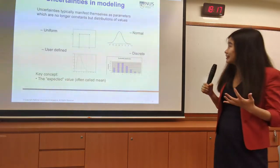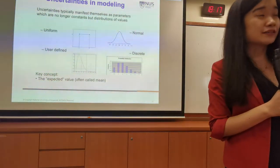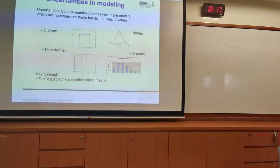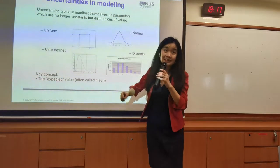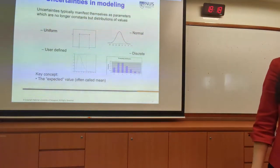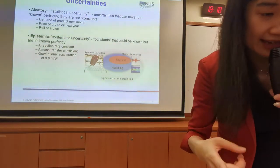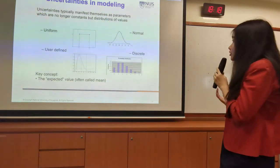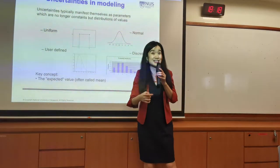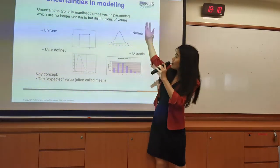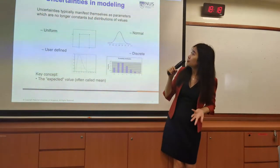Following the concept of uncertainties, if you want to model them mathematically, these uncertainties are typically placed in the parameters. For example, the demand for the next day or the price of crude oil next year — those fluctuation levels are modeled as parameters. Parameters here are no longer constants but follow some distribution.